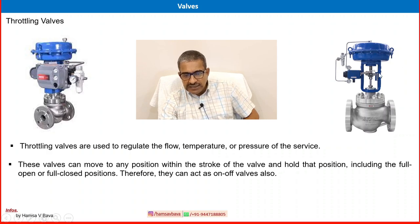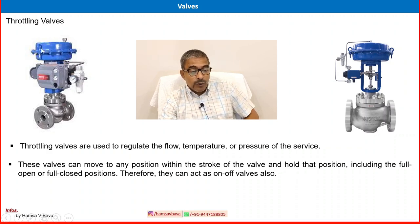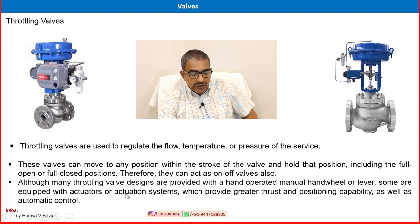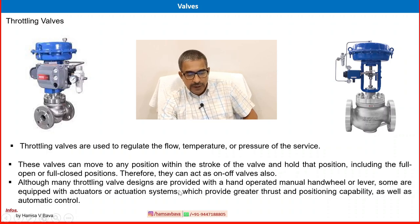I kindly request you to watch my instrumentation and control module, specifically the valve section, where I clearly explain the actuator system, positioner, pressure regulator, and control valves. Control valves fall under throttling valves. Although many throttling valves are provided with a hand-operated handwheel, most are equipped with an actuator or actuation system — pneumatic, electric, or hydraulic — which provides greater thrust and positioning capability as well as automatic control.